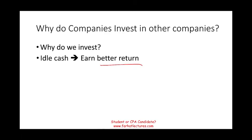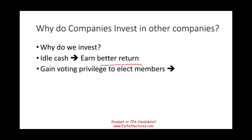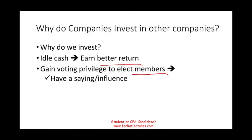Companies also invest for other reasons. It's to gain voting privileges — to elect board members, to elect officers of the company. Companies invest in other companies to have a say, to have some sort of influence, because they want to help direct that company's operations in a strategic way. Maybe that company is their supplier, or maybe it's a potential competitor — whatever the reason, they want to be on board to see what's going on.